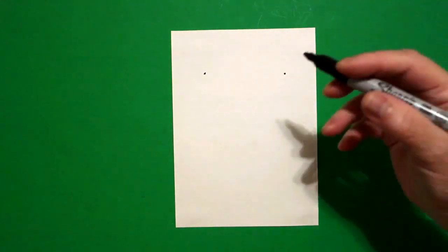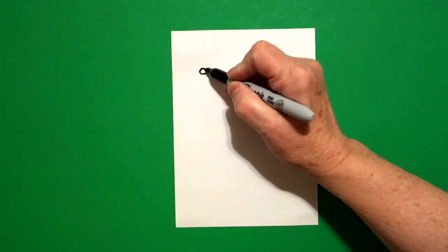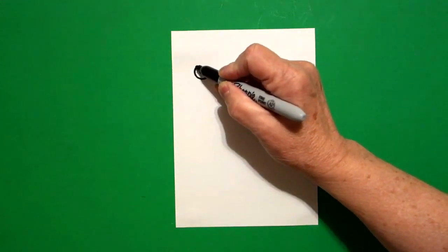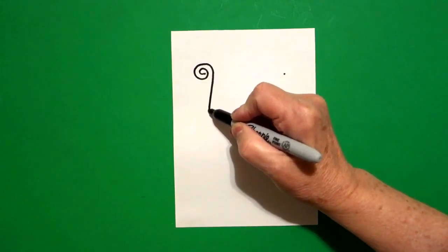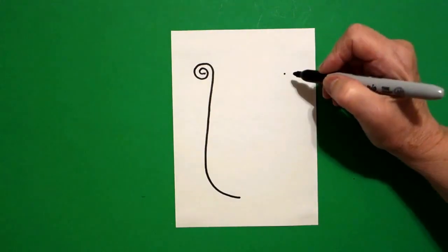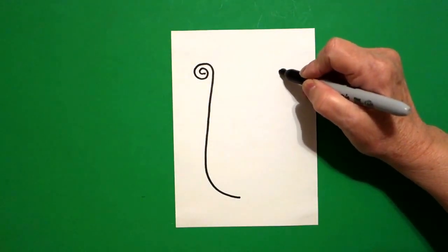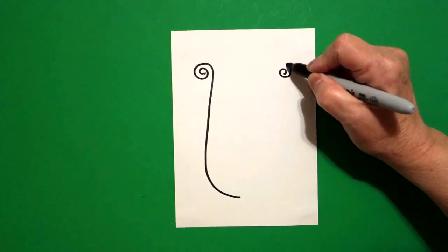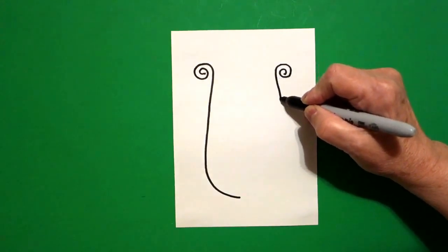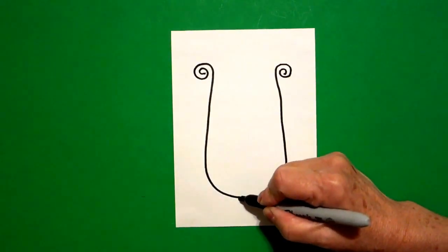I go back to the left. I'm going to start at the dot and draw a spiral, straight line down, curve, and stop. I come to the right hand side, go to the dot, and draw a spiral, straight line down, curve line, and connect.